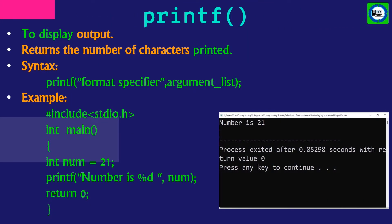The printf function is used to display output. The return type of printf is integer, and printf returns the number of characters printed. The syntax of printf contains a format specifier and an argument list. For example, with integer variable num equal to 21 passed as an argument in printf, writing the format specifier percent d with num as the argument, the output is: number is 21.